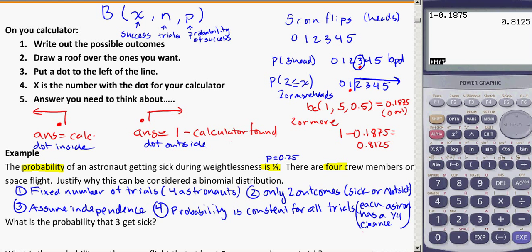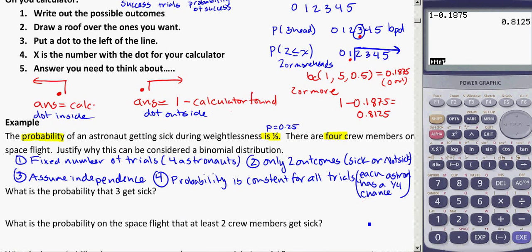So let's take a look at solving this one. What is the probability that three astronauts get sick? So going with this method that we can think about, there are zero astronauts getting sick, one, two, three, or all four of them getting sick. So if I want to know the probability that exactly three gets sick, I'm going to be looking at this as a precise, so it's binomial precise. My x is three, my n is four astronauts, and my probability is 0.25.